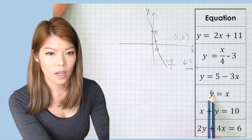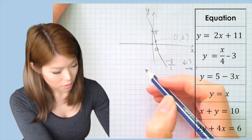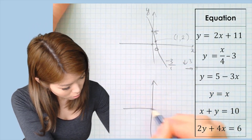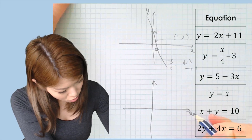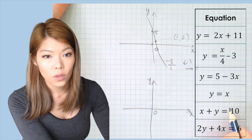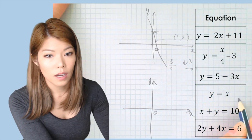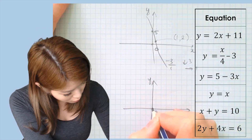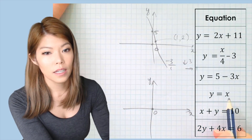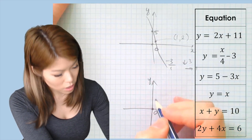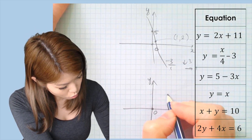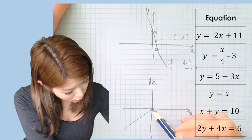For the next one, draw the axes. The y-intercept is (0, 0) and the gradient is 1, so go up 1 across 1. Our second point is (1, 1).